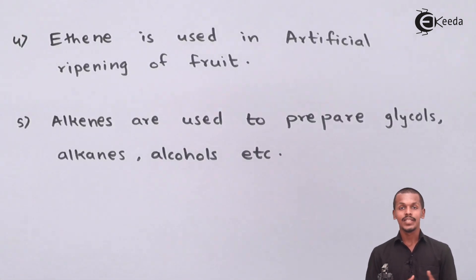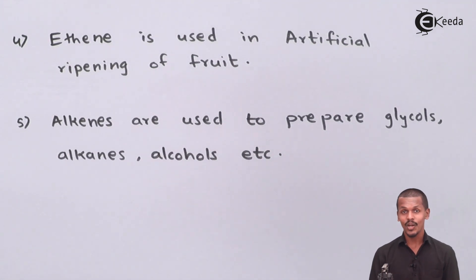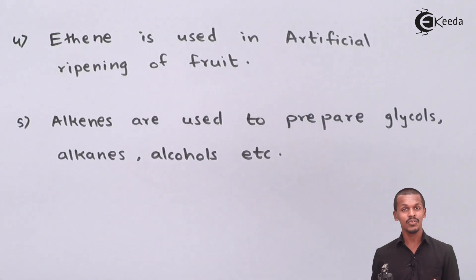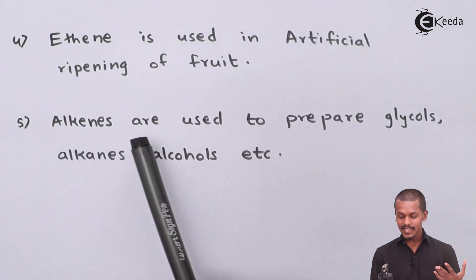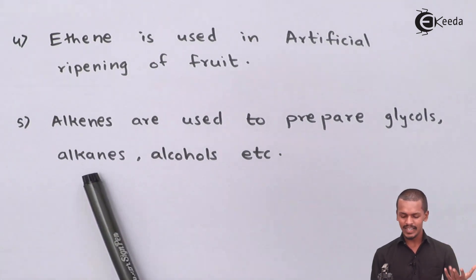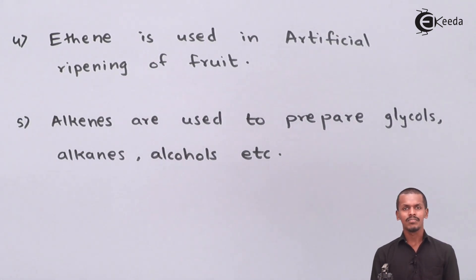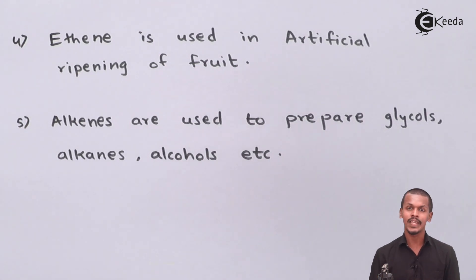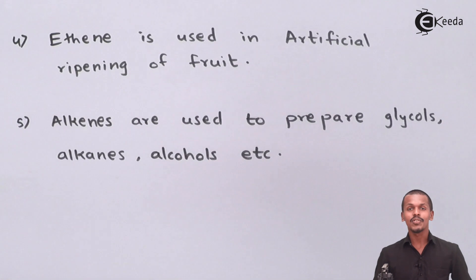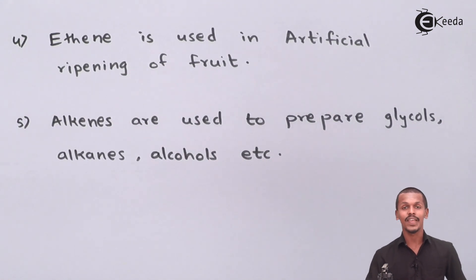Another major use is the artificial ripening of food — ethylene is used in artificial ripening of fruits. Alkenes are also used to prepare glycols, alcohols, and alkyl halides, as we studied in the reactions of alkenes. These were all the uses of alkenes for this chapter.